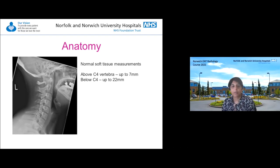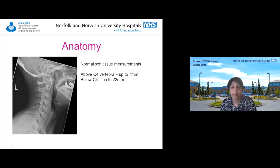Now it's a lateral soft tissue x-ray and we're concentrating mainly on the ENT aspect of it. However, you obviously do include the cervical spine, and normally in the cervical spine you should have what's called the lordosis - a curvature of the spine. If they've lost that and it becomes more a kyphosis, that could indicate the patient has some pain or there's something altering the position of their spine.